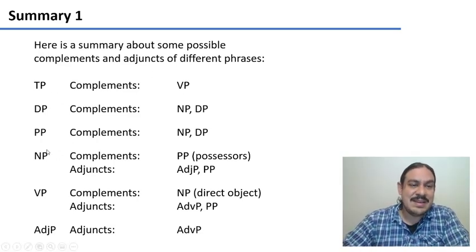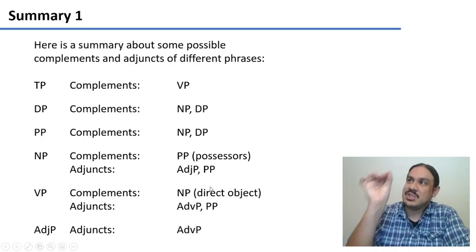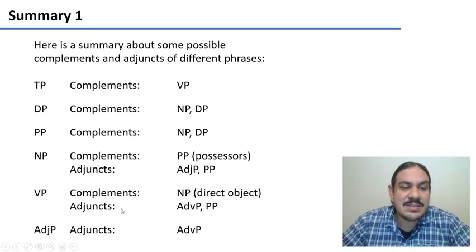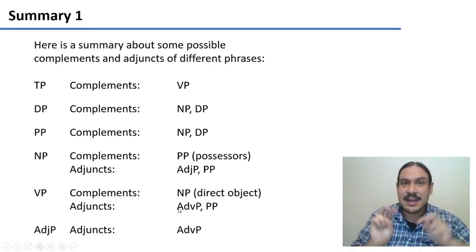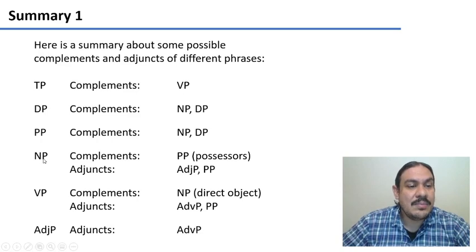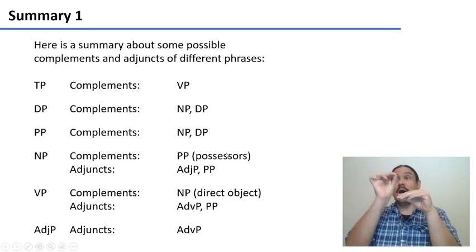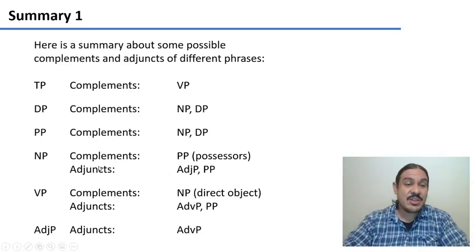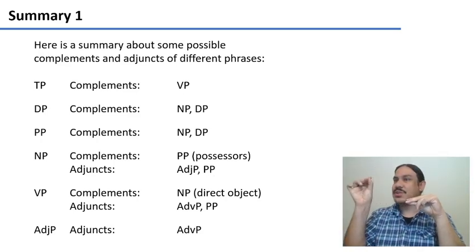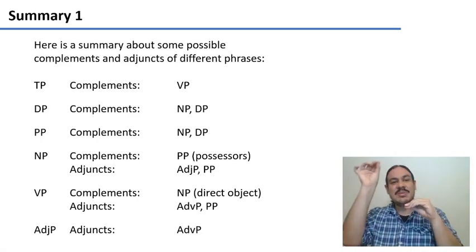Verb phrases usually take noun phrases as complements — their direct object, like in 'likes cheese' — because this is critical to making sense of the verb. And they can take different types of adjuncts, like adverbial phrases such as 'now,' or prepositional phrases like 'with me.' Nouns can take complements — noun phrases like possessors, for example 'the book of Rolando.' And they can take adjuncts like adjective phrases, like 'cold pizza,' or prepositional phrases like 'a pizza with cheese,' which only gives additional information about the type of pizza.